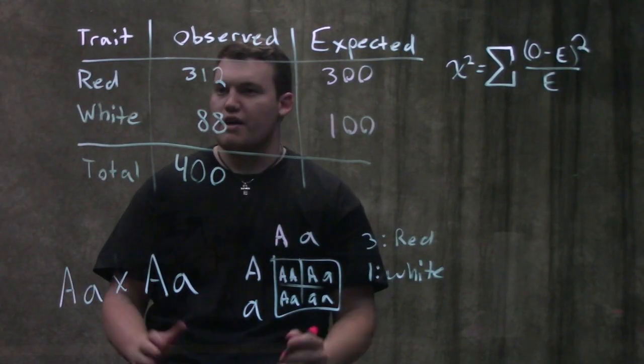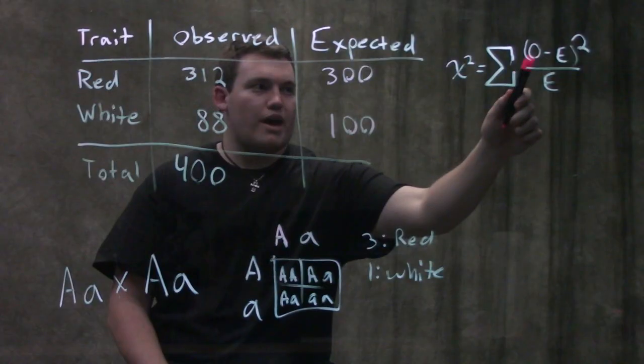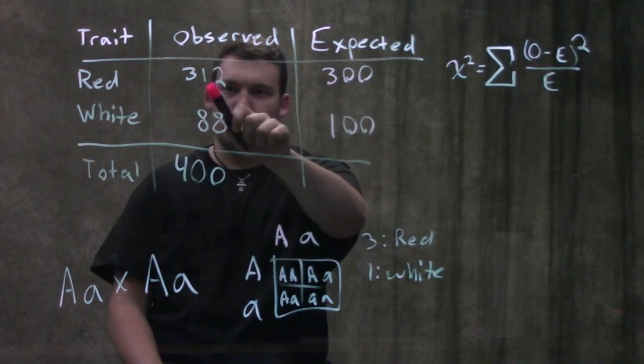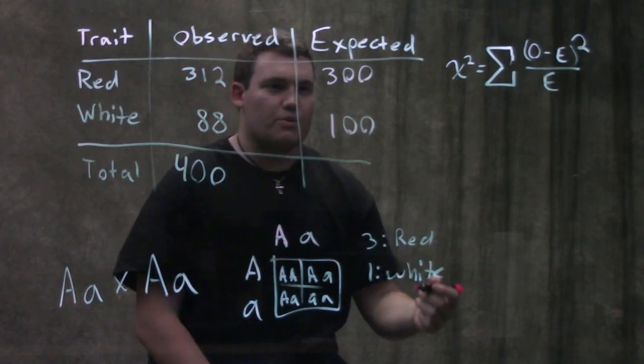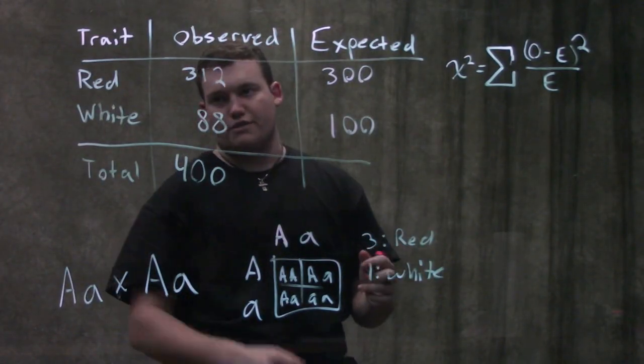So now we're gonna look at this funky formula and try and figure out what it actually means. So we have observed minus expected squared divided by expected. So the first thing we're gonna do and then we have to add those up for each of our traits.